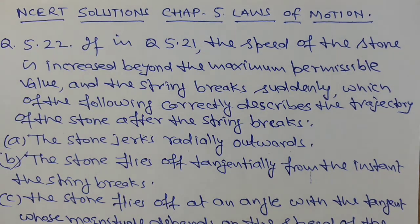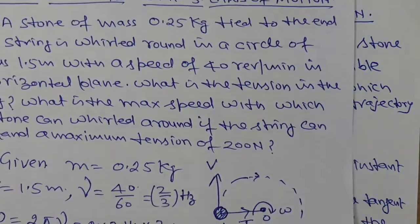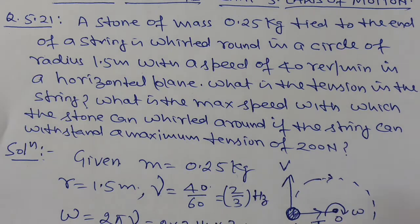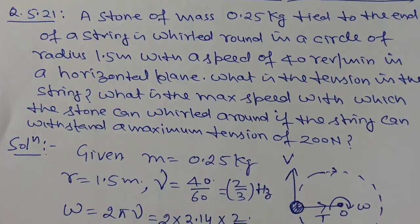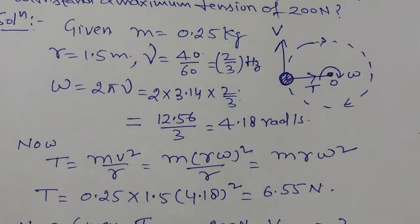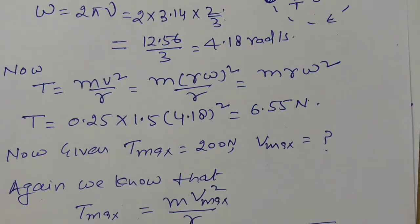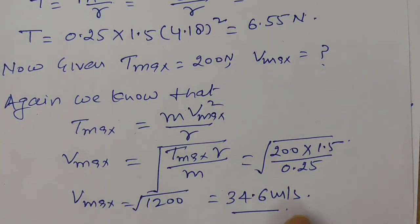From Question No. 5.21, we have a string attached to a stone in a horizontal plane. The maximum tension is 200 N. The maximum permissible speed is 34.6 meters per second.